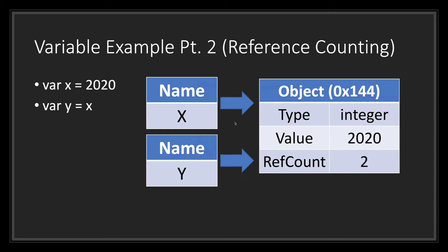As you can see, our application goes through the same process it used to create X. However, instead of creating a new object, Godot creates the name Y and points it to the existing object that holds the value 2020. Basically, Y is pointed to whatever X was pointing to. As a result, the object increases its reference count by 1.